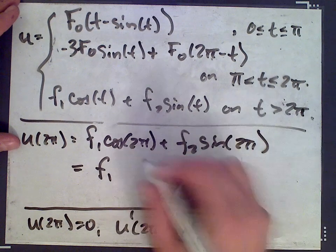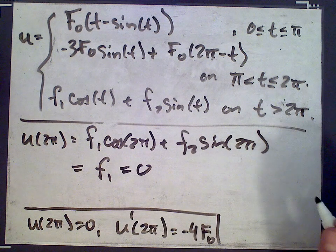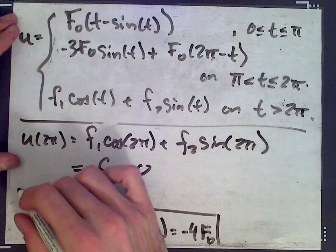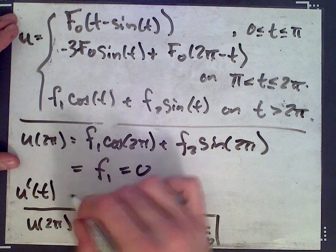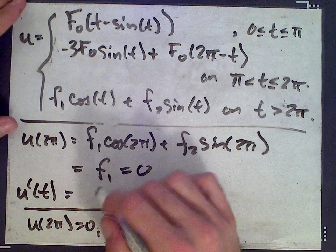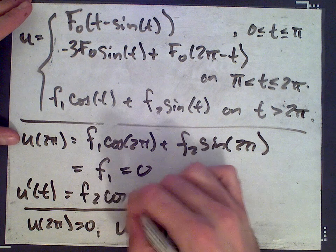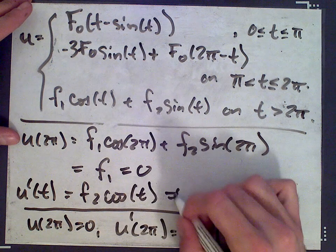So f1 is 0, so it's going to be f2 cos t, I guess cos t.